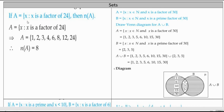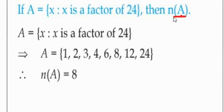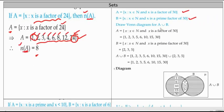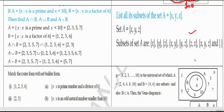Sets: x is a factor of 24, then n of A. n of A is the number of elements in A. First, it is set builder form. Convert to roster form. Another way of asking is find A union B, A intersection B, A minus B. Given in set builder form, first convert to roster form. Intersection contains common elements, union contains all elements which should not be repeated.